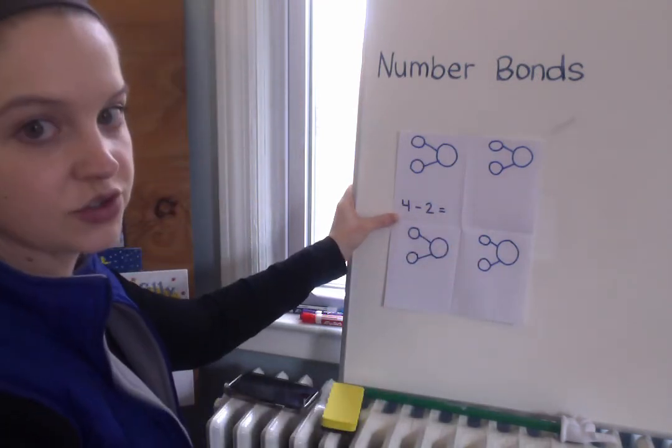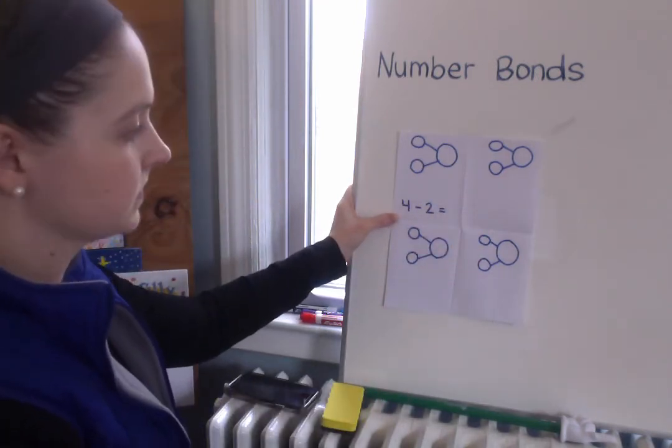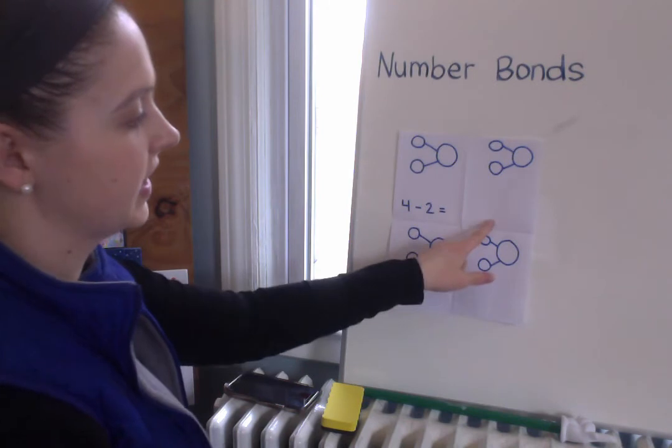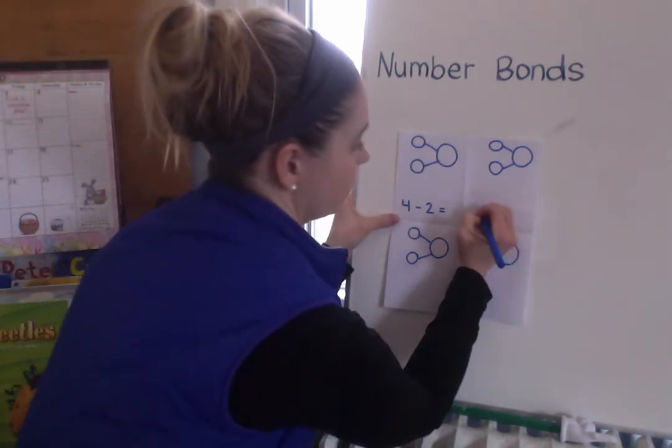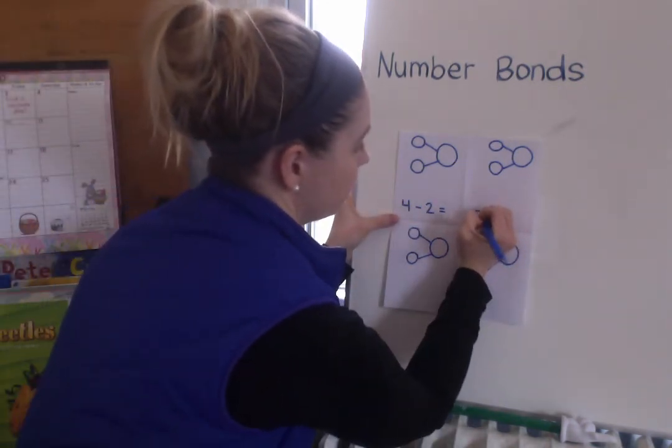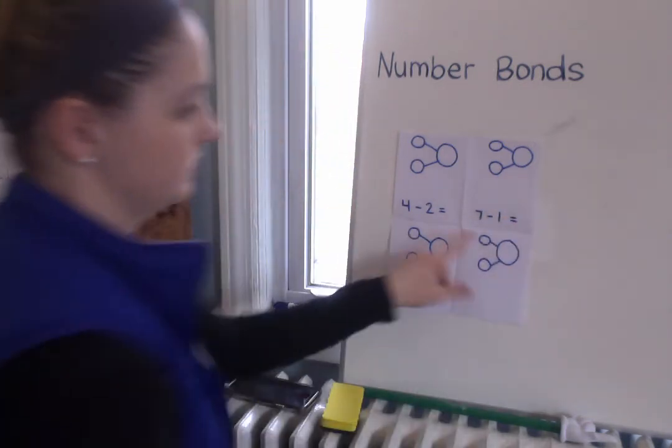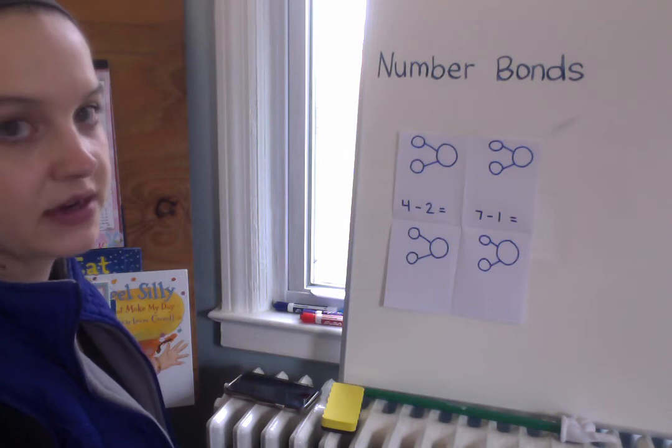So copy that down into your first box and the next box over your subtraction problem is going to say seven minus one equals. Go ahead and copy that in your next box.